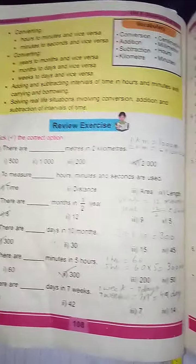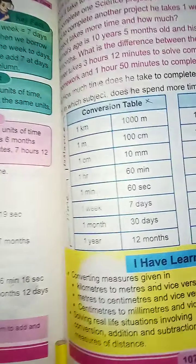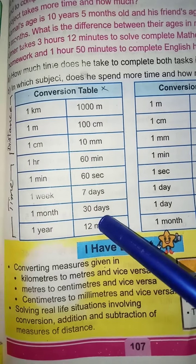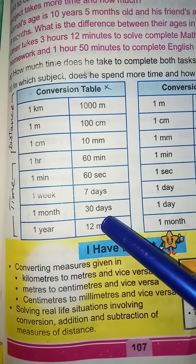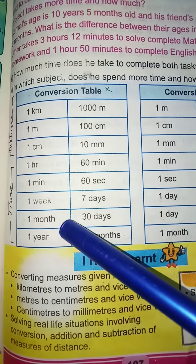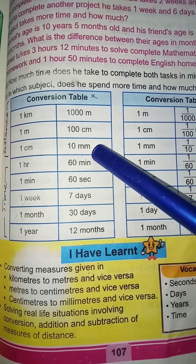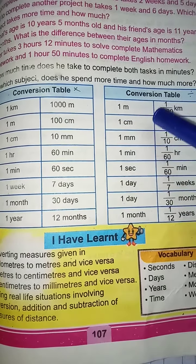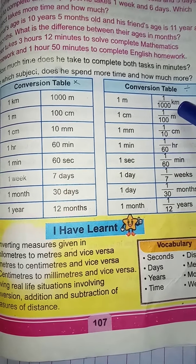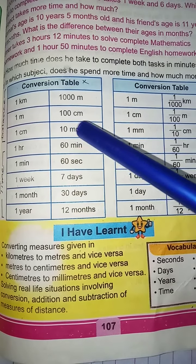Before attempting any question of unit number five, you should know about the conversion of different units. Come to page 107 where you can see the conversion of different units. The upper ones are units of distance and the lower ones are units of time. This table shows how you can convert larger units into smaller ones, and this table shows how you can convert smaller units into bigger ones. Kilometer is the larger unit of distance, then there is meter, centimeter, and millimeter.